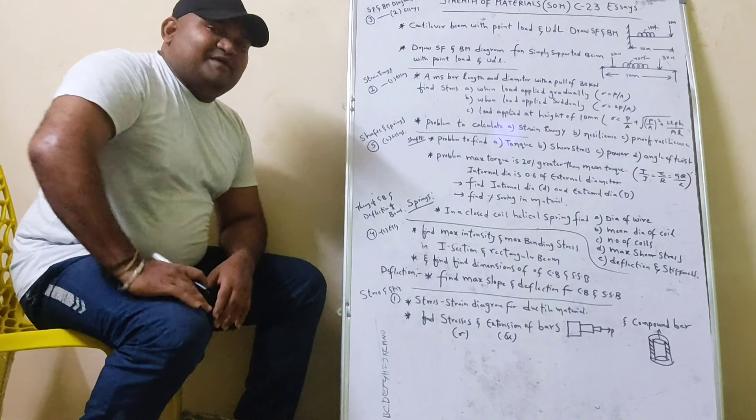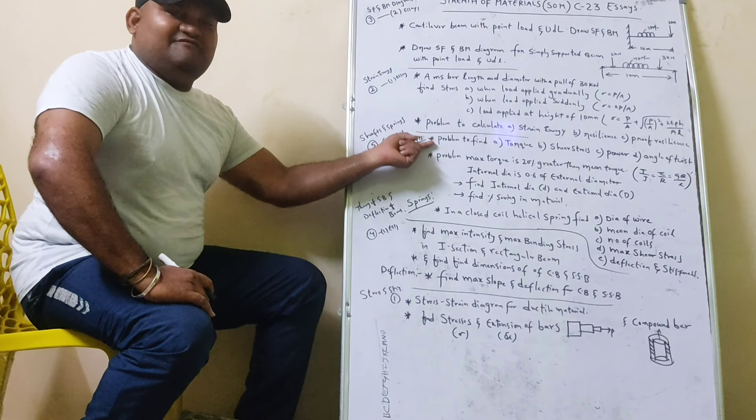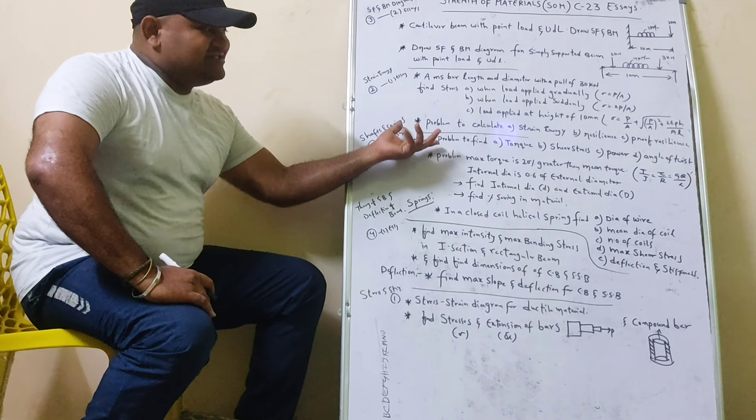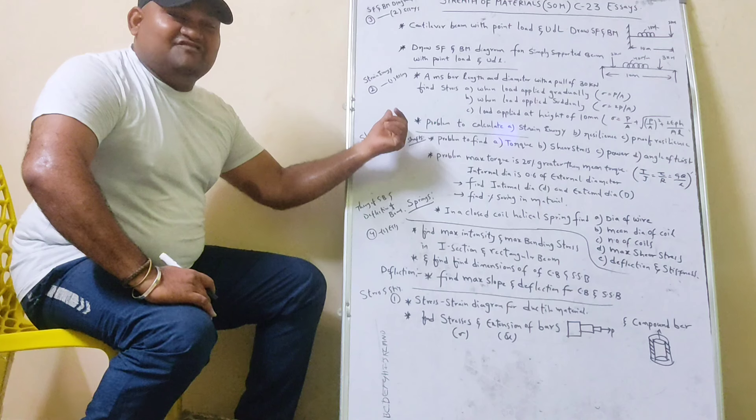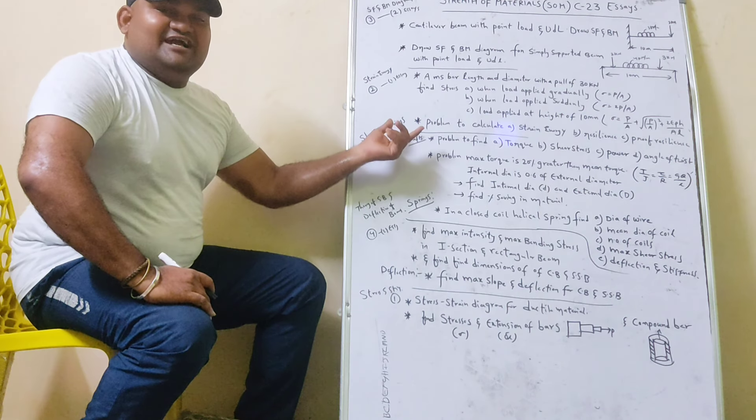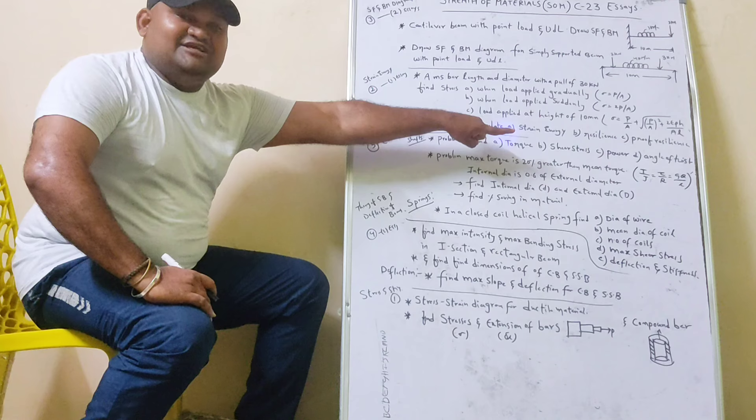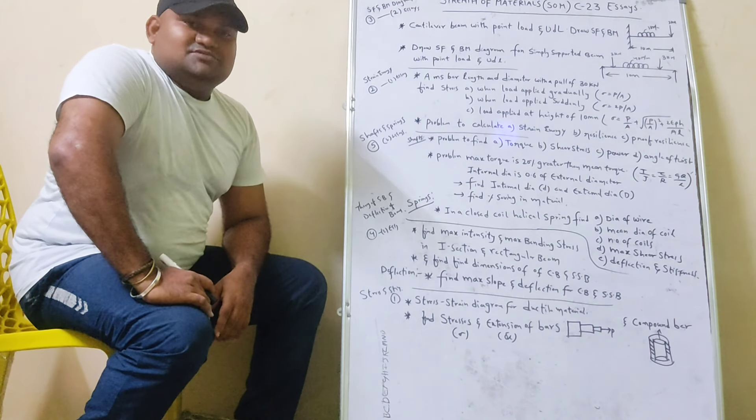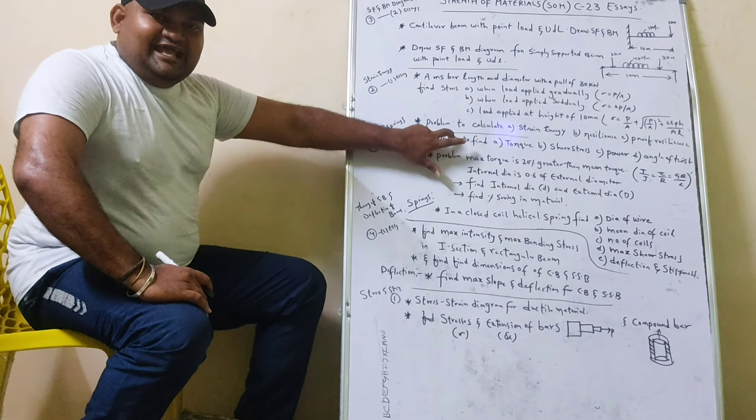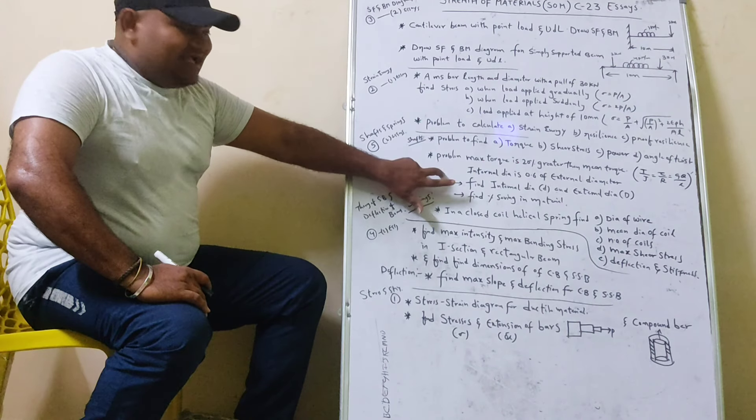The fifth chapter is Shafts and Springs. If you have Shafts, you can find Torque, you can find stress, you can find Power, you can find Angle of Twist, major relation, T by J equal to T by R equal to G theta by L. What is this?